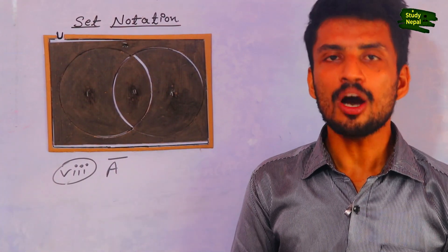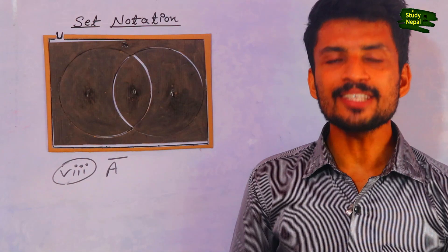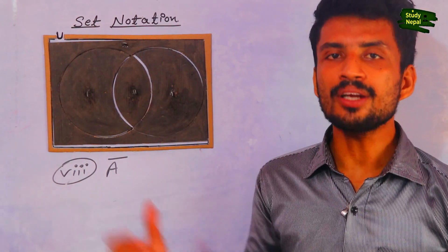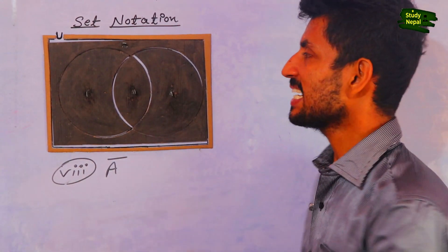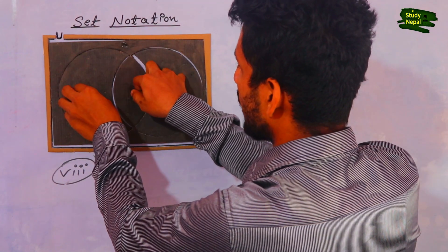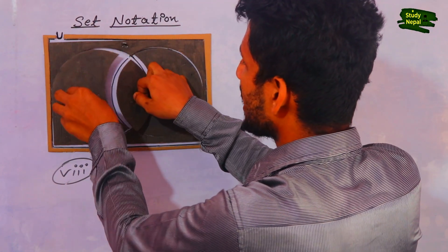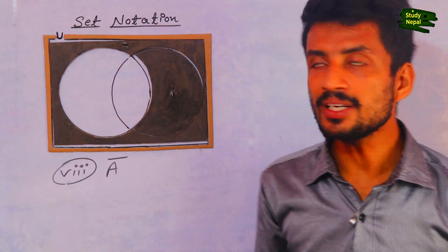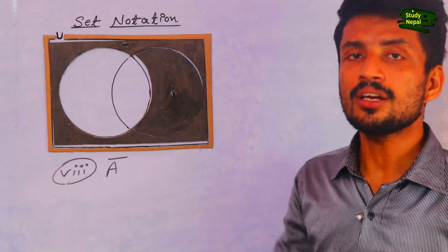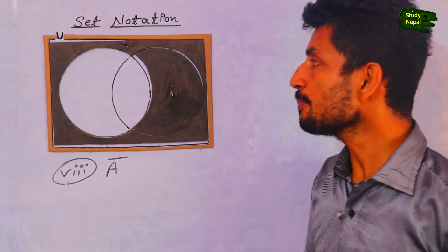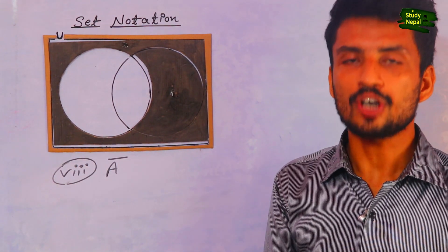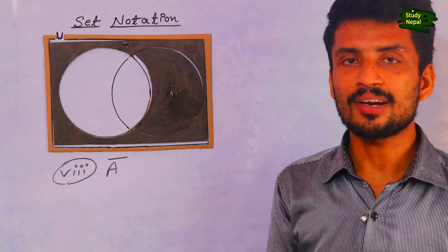Now the eighth topic is A complement. It means we have to remove A from the given Venn diagram. We remove the A portion, and the shaded portion which remains is the answer of A complement.